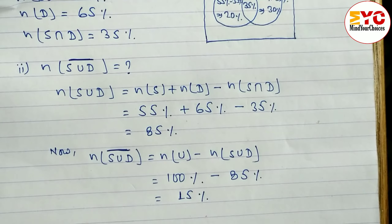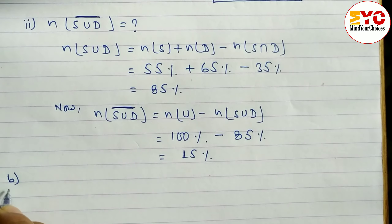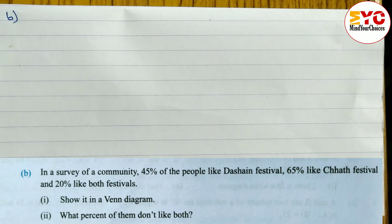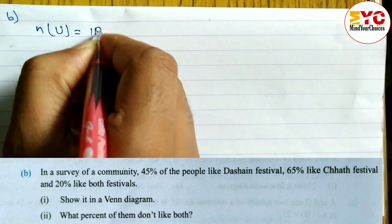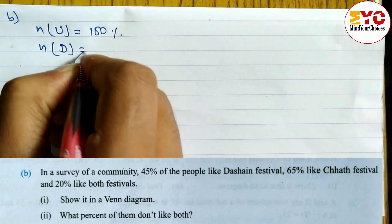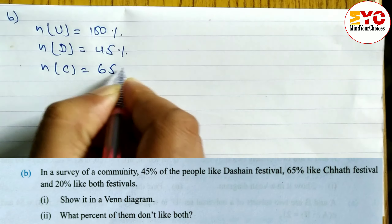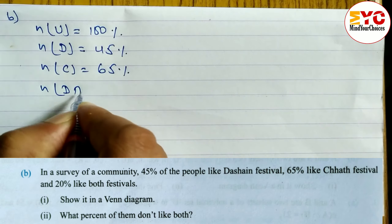Hope you understand question 7a. Now look at question 7b. In a survey of a community, 45 percent of people like the Dashain festival, 65 percent like the Chhath festival, and 20 percent like both festivals. Since this question is also in the form of percentage, n(U) is equal to 100. So n(D) is 45 percent, n(C) is 65 percent, and n(D ∩ C) is 20 percent.